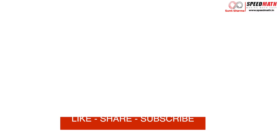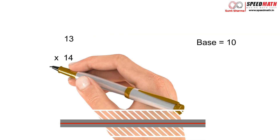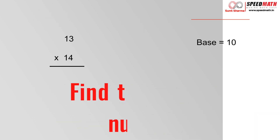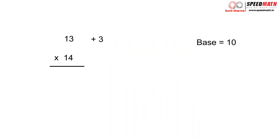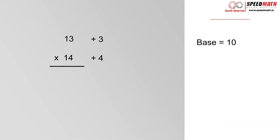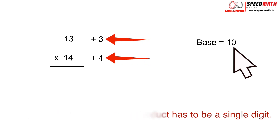Let's begin with this tutorial. Let's take an example where the base is 10. Take two numbers close to 10 — say 13 and 14. The next step is to find the difference of each number with the base 10: 13 is 3 more than 10, and 14 is 4 more than 10. Step 2 is to take the product of the differences, and the product has to be a single digit, because the base has one zero.